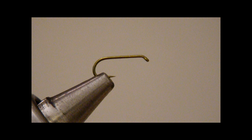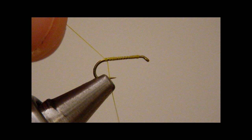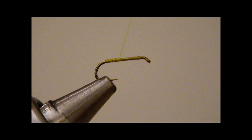This is the sulfur version of the Simple Cripple. This is a number 18 TMC100 mounted in the vise. I've got my yellow ADOT thread. I'm going to start from behind the eye, put a base layer down, come down to just above where the barb would be, trim off the excess thread. Now I'm going to run back up to where the eye is.